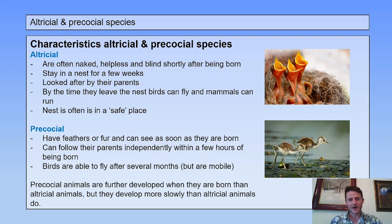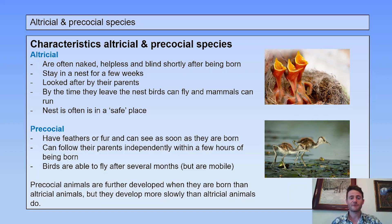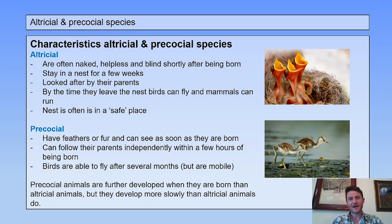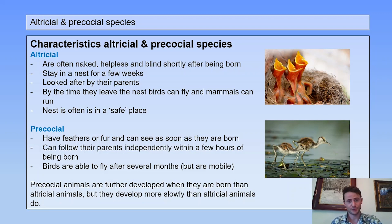A big difference between altricial and precocial species is that precocial animals are further developed when they are born than altricial animals. But afterwards they develop more slowly than altricial animals do.